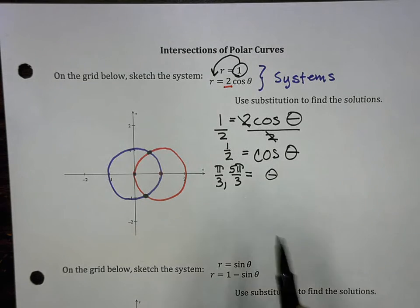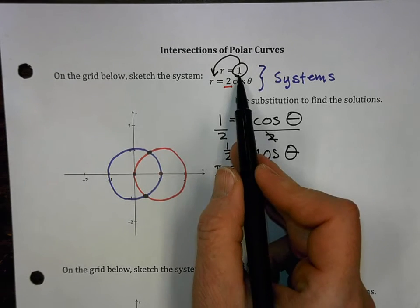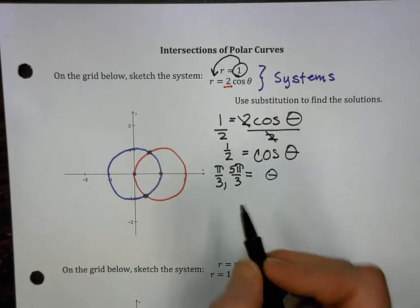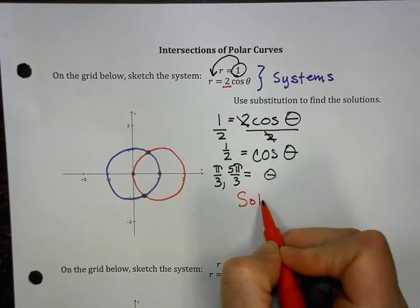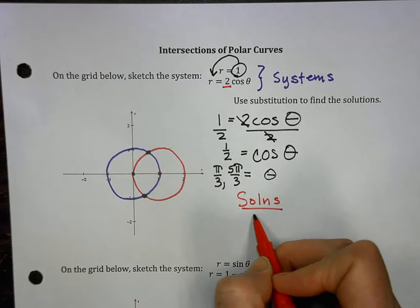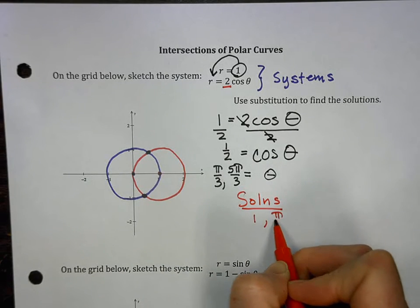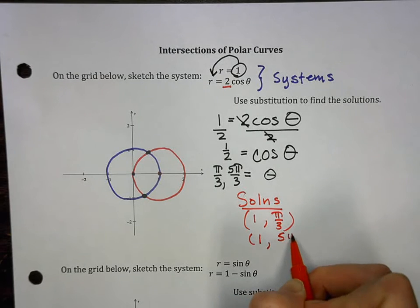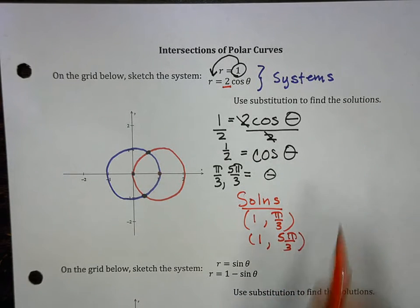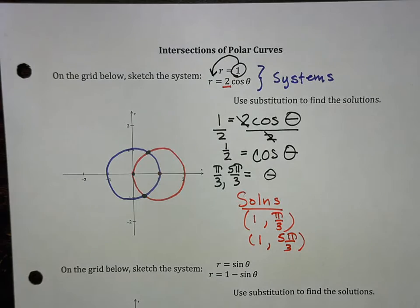I was going to say I don't have an r, but I do. I don't have to plug anything in. I have an r of one. So my solutions are one pi over three, there's one solution, and one five pi over three. Not too bad. Let's do it again.